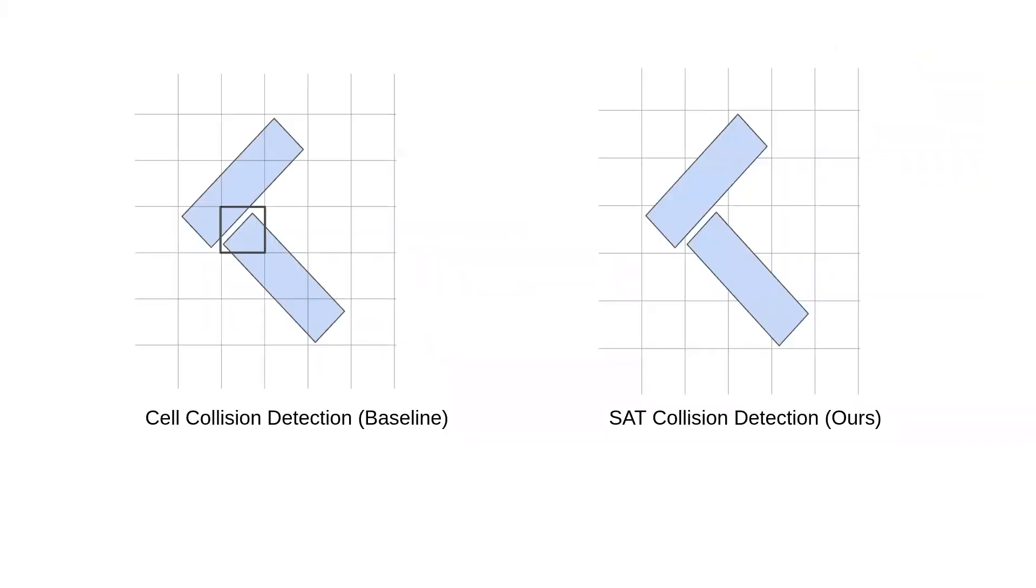To test our approach, we compare to the baseline approach as cell collision detection. This method checks for collisions by approximating the cells occupied by the shape of an agent. For this approach, a collision is defined as when two agents occupy the same cell at a given time.